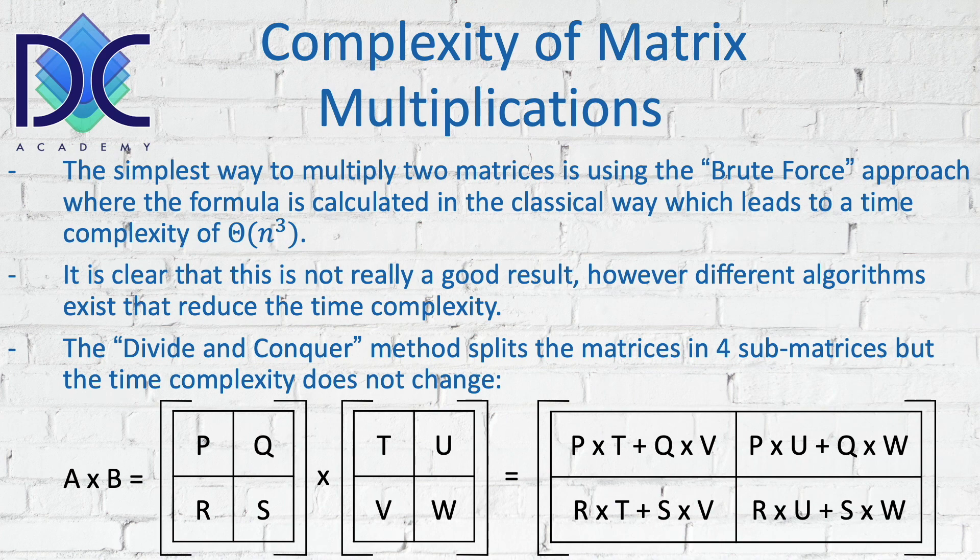Now when we look at this, we have the new formula here how to calculate those different values, and we're always making these matrices smaller and smaller, and then we find the final solution. But unfortunately, the time complexity when we do this with the divide and conquer method doesn't really improve the time complexity.